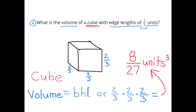C: What is the volume of a cube with edge lengths of 2/3 units? The volume formula is base times height times length, or in this case 2/3 times 2/3 times 2/3. And 2 times 2 times 2 is 8, and 3 times 3 times 3 is 27. So the volume of this cube would be 8/27 units cubed.